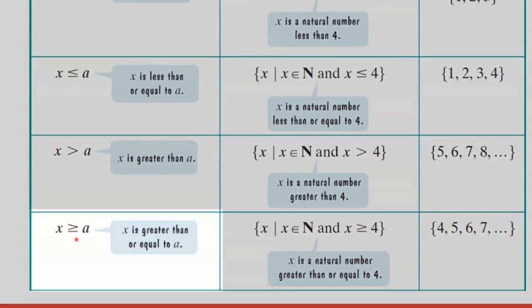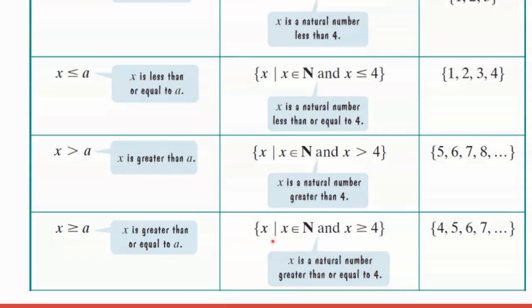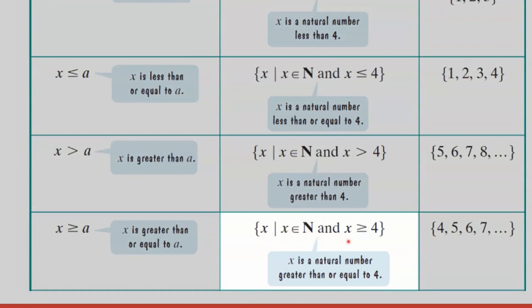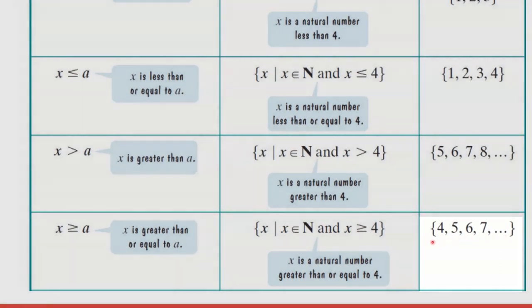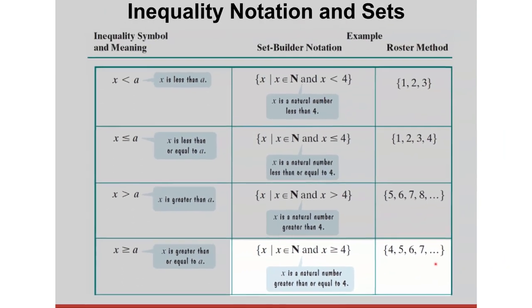This symbol is the greater than or equal to symbol, read as x greater than or equal to a. The set x such that x is in N and x greater than or equal to 4 means x is a natural number greater than or equal to 4. In roster method form, because of the equality symbol, you start with 4: 4, 5, 6, 7, and so on.